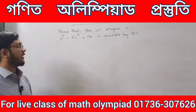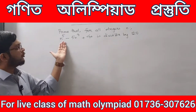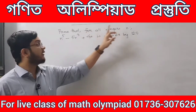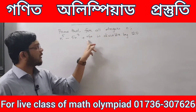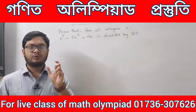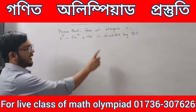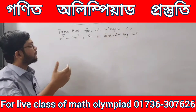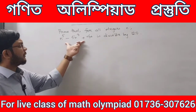So, we will see the next question. This is the proof that for all integers n, n to the power 5 minus 5n cube plus 4n is divisible by 120. This means that n is all integers — this is the expression.